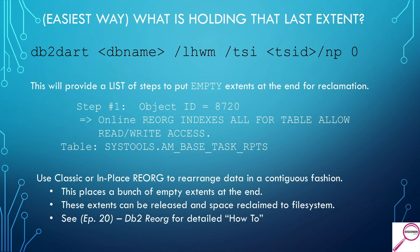Another way to handle this is the lower high watermark command with db2 dart. It goes through a what-if process: it knows at the very end you need to reorg a specific table, and once done you'll have some empty extents. Then it checks if reorging a second table would free even more extents, and plays that through step by step to give you the most optimal solution. You'll see it lists step one, step two, step three — each with the object ID to reorg. Watch out for when it says to unload and reload your data, which we'll cover shortly.